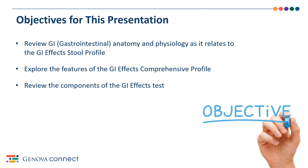First, we must review anatomy and physiology, so when we discuss the components of the profile, you'll have an understanding of what area of the gastrointestinal or GI tract we are referring to and its expected function. We'll also explore the features of the GI Effects profile and its layout. Lastly, we will review the components of the profile, but as it relates to your specific findings and treatment, please speak with your primary care physician and do not attempt to self-treat.